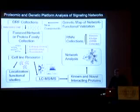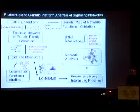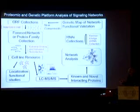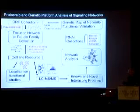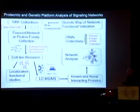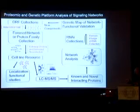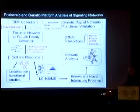In the last few years, we've worked to develop a platform that allows us to do facile types of proteomic analysis. This platform involves a collection of open reading frames — in particular, the Vidal open reading frame collection — which we use to generate focused networks or protein family collections using gateway cloning technology and retroviral transduction technology. This allows us to create tagged cell lines for functional and proteomic studies, wherein we take an HA-tagged protein expressed off a retrovirus, IP that protein, and submit the entire complex to mass spectrometry.